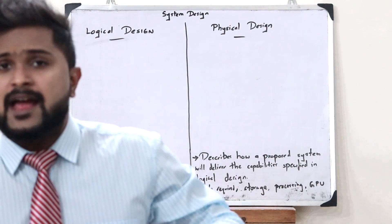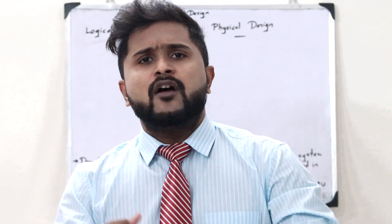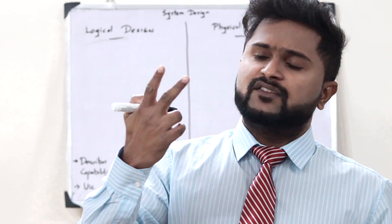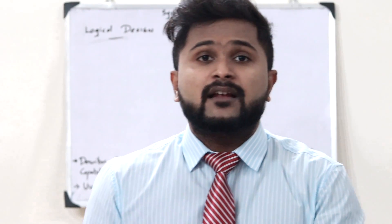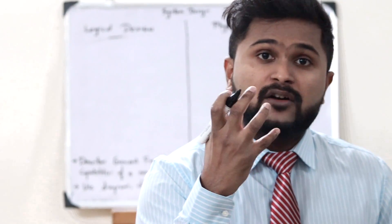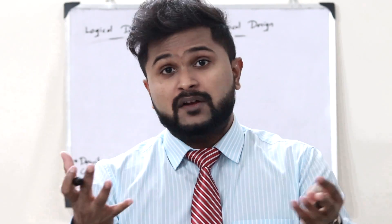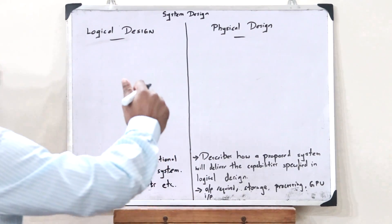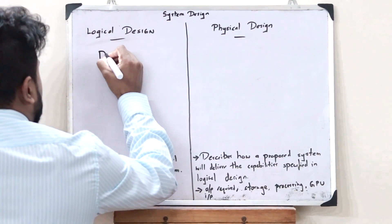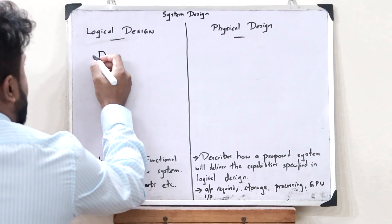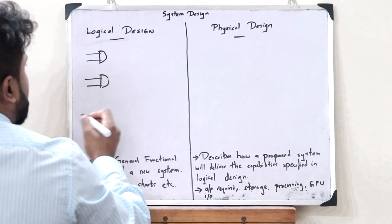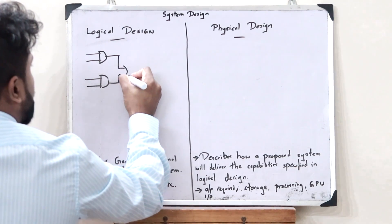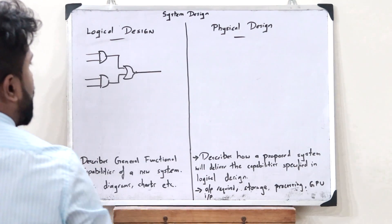Let us assume that I am going to design a particular chip. For me to design a particular chip, the first thing is that I should know what function this particular chip performs. Once I know that, I could simply implement it. Let us assume I need two AND gates, and the output of these AND gates is fed into an OR gate, giving one output.